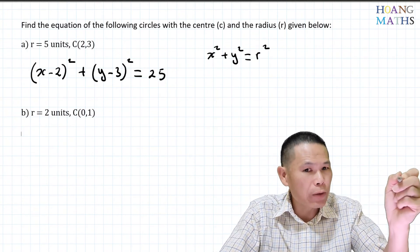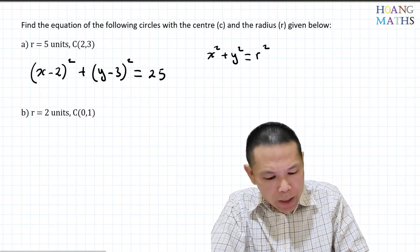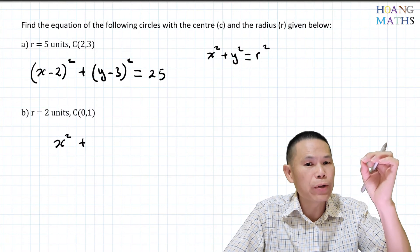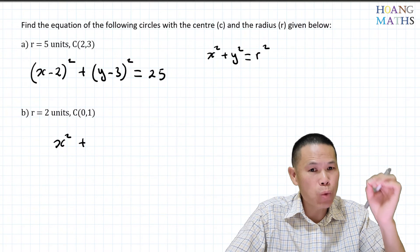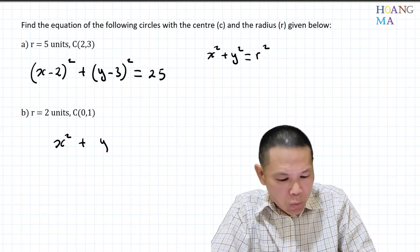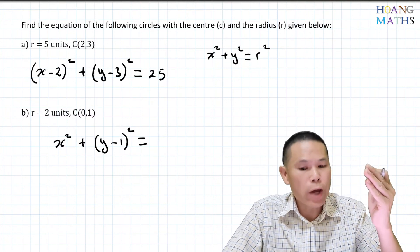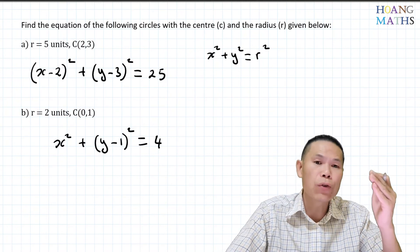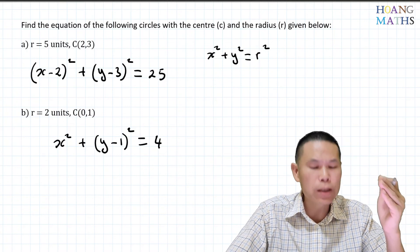For the second one, starting from x squared plus y squared equals r squared: the center's x value is still zero, so it stays x squared. The y value moved up one unit, so instead of y squared it becomes (y minus 1) squared. The radius is 2, so squared gives 4. The equation is x² + (y−1)² = 4.